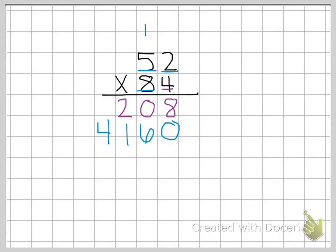And then the last step is to add those two numbers together. So eight, six, three, and four. So 4,368.